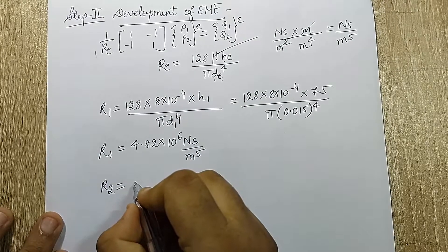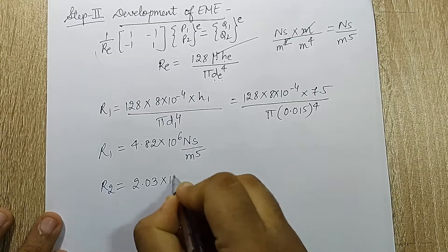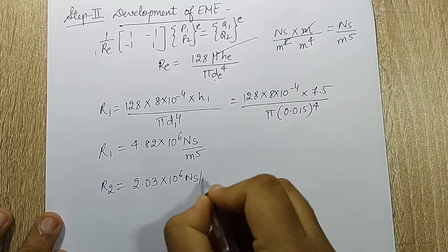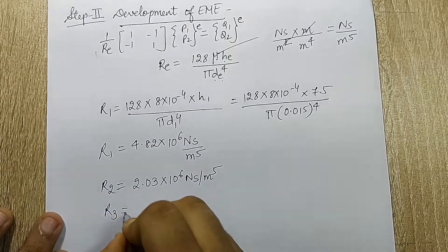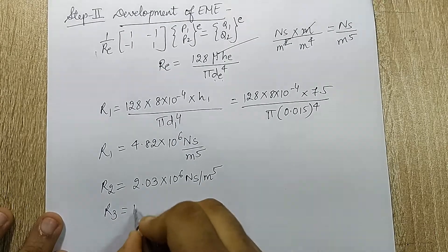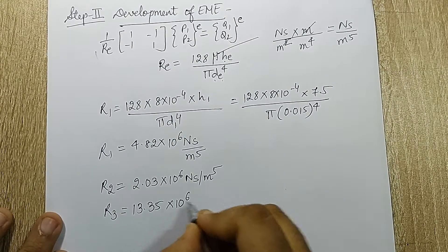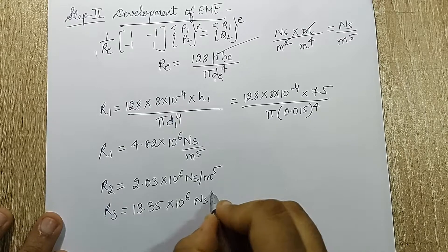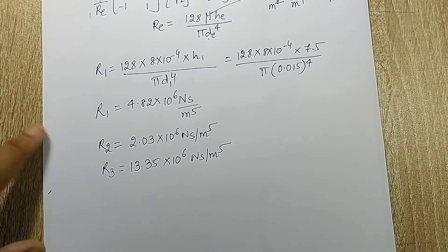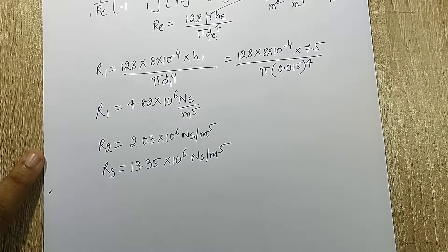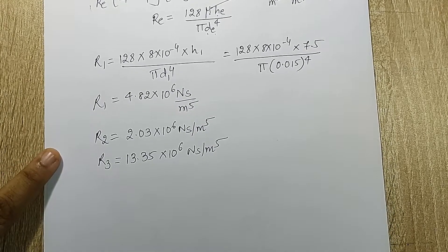R2 = 2.03×10⁶ N·s/m⁵ and R3 = 13.35×10⁶ N·s/m⁵. You can calculate these individually for each element or all at the start — it is your choice.